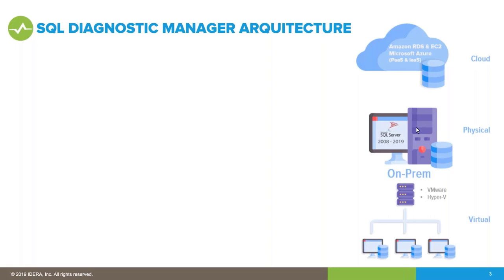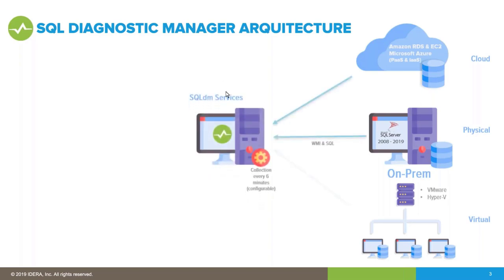The architecture covers cloud, physical, and virtual environments — VMware, Hyper-V — with the same information from all three, plus cloud-specific metrics. We support SQL Server 2008 through 2019, and we have experimental support for 2022, which is coming very soon to full support. From a centralized server, services collect information without installing anything on the monitored systems — by default every six minutes, but configurable.